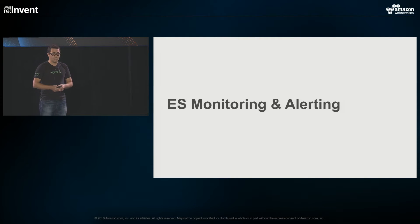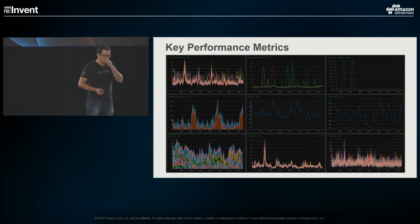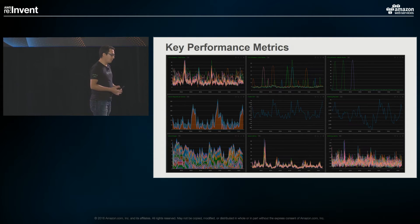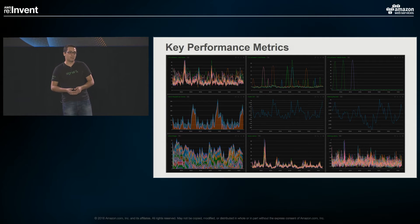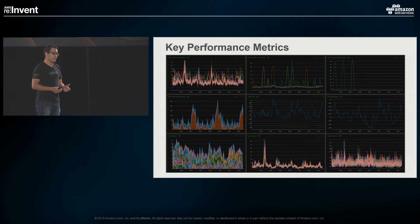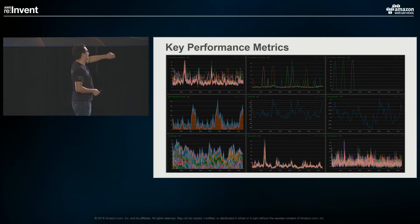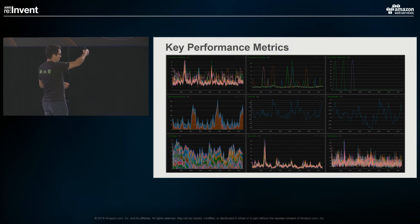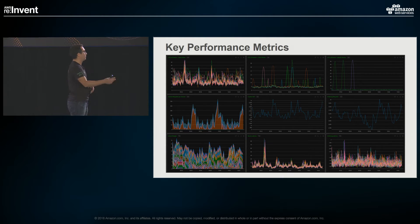Let's jump to how we monitor and alert on Elasticsearch. This is one of the dashboards I usually look at — it has what I think are the key metrics we usually care about. For our use case, CPU load was one of the most problematic areas. We were always having CPU spikes and queries that spike resources on the system. So CPU was one of our top things to watch. Obviously it could be I/O if you're very indexing-heavy. For us it was CPU. We watch CPU on the data nodes and on the client nodes. The master nodes are usually not very spiky.